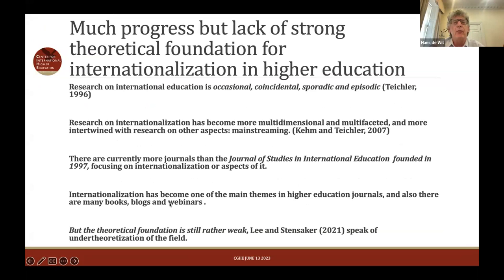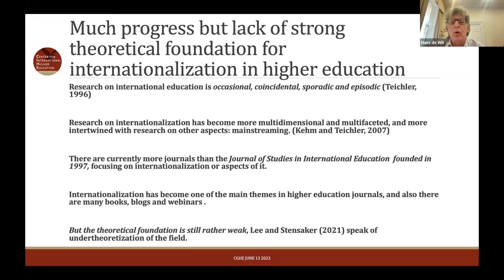Internationalization of higher education basically started from a very practitioner point of view — people in offices of international education trying to understand what they are doing and how they're going to do it. In 1996, Ulrich Teichler wrote that international education research was basically occasional, coincidental, sporadic, and episodic. Ten years later, he and Barbara Kemp said it had become more multidimensional and multifaceted — mainstreaming, as they called it. The Journal of Studies in International Education, created in 1997, generated a scholarly debate. So that in itself shows an evolution taking place.